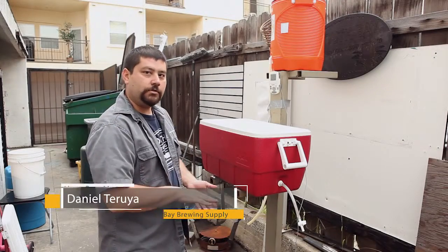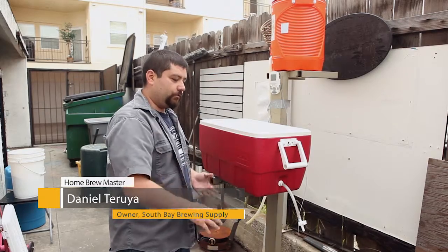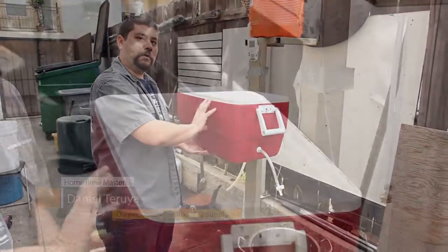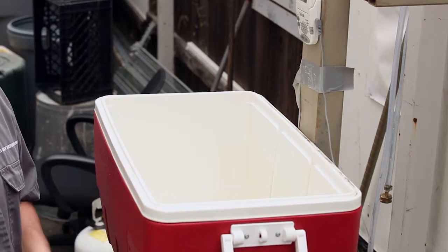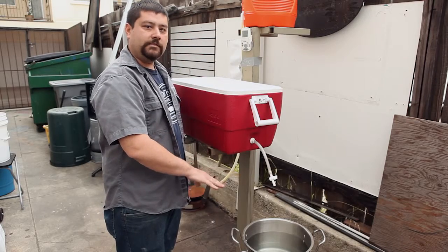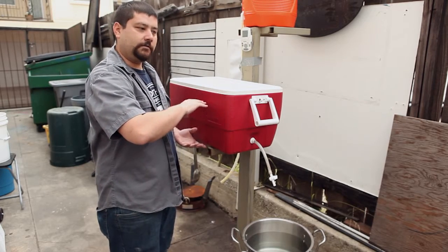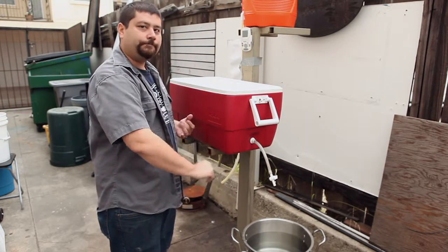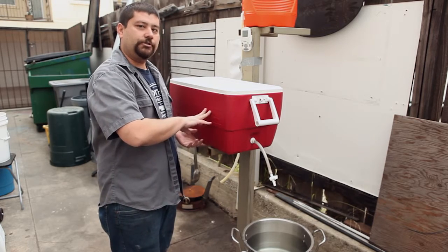Right now we're heating up our strike water. We are going to put this into our mash tun, which will be a vessel for our grain so we can convert the sugars out of the grain. We're going to heat our water up to about 165. So when it hits our grains, the grains are going to be colder than our water, and we want to get our temperatures to about 152 while we mash in.